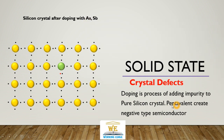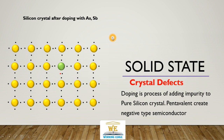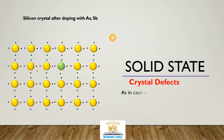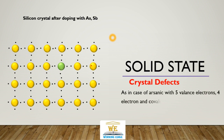When arsenic or antimony is introduced, it replaces a silicon atom which had 4 electrons. But arsenic or antimony has 5 electrons, so there is 1 extra electron. Four electrons are used for bonding in place of silicon, but the extra electron is available and free to move throughout the crystal. That gives a certain negative charge to the crystal — that is why it is called n-type silicon (negative-type silicon).